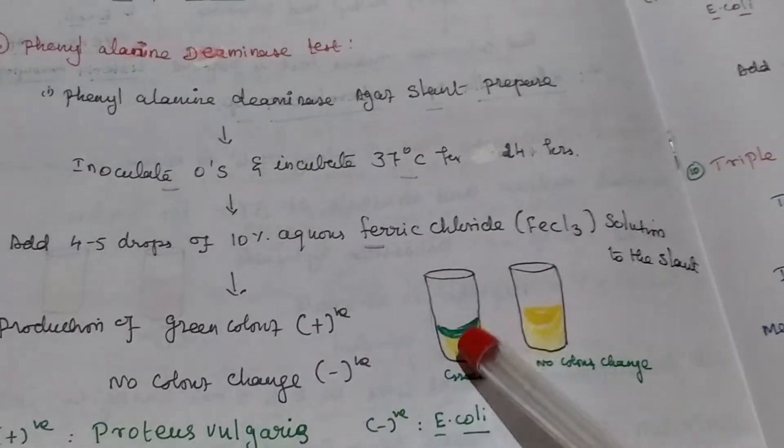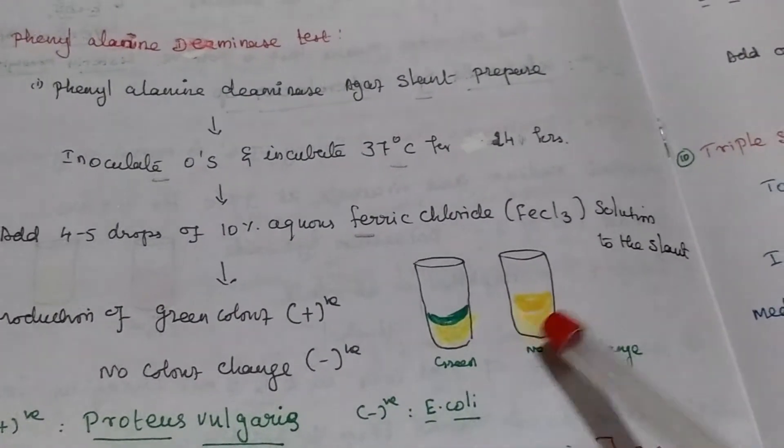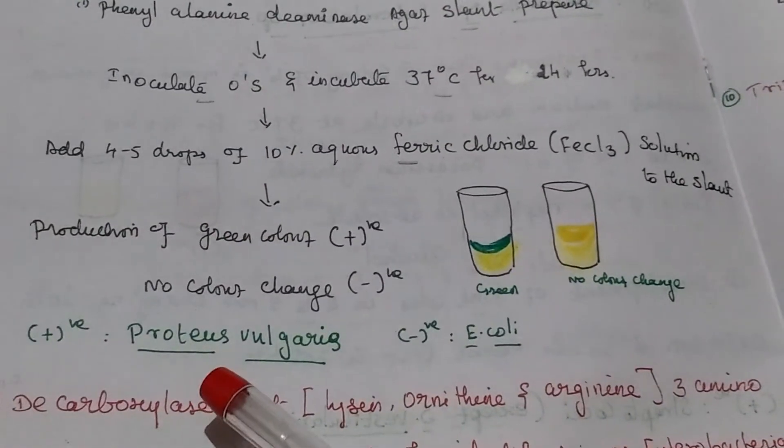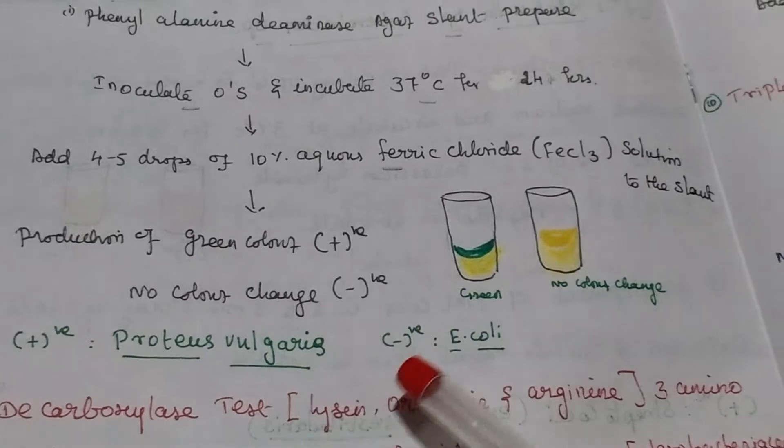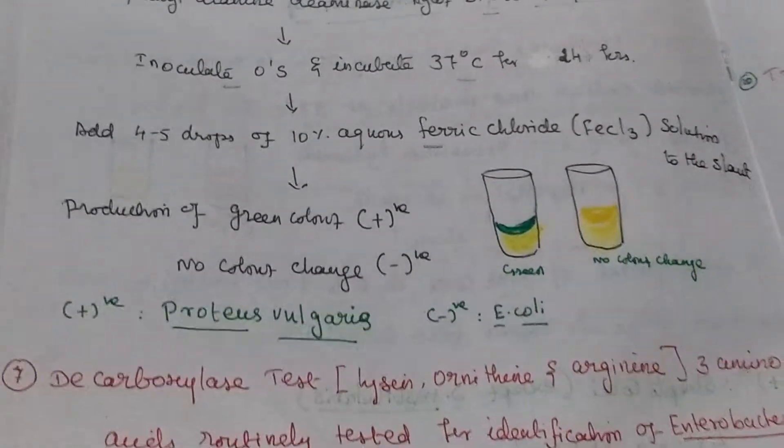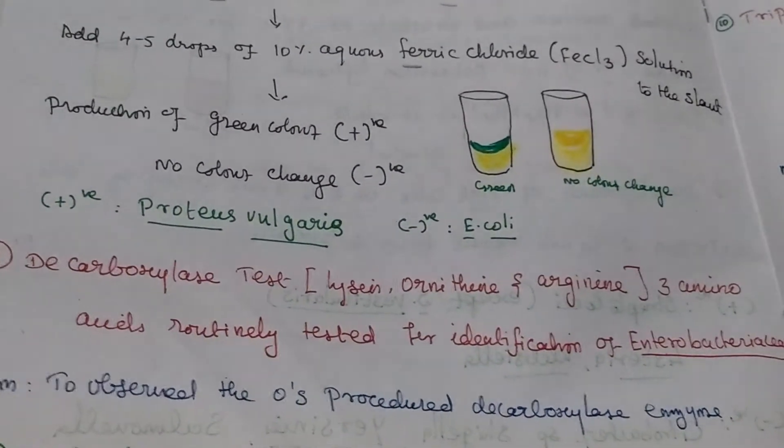Green color formation indicates positive, otherwise negative. Positive organism proteus vulgaris. Negative organism E. coli. Then decarboxylase test.